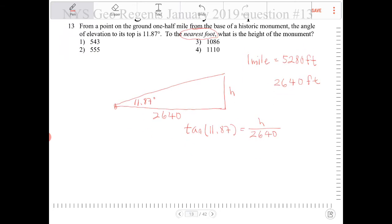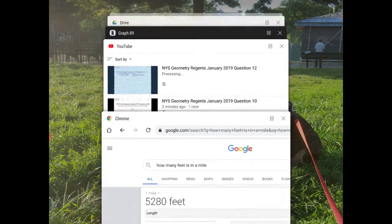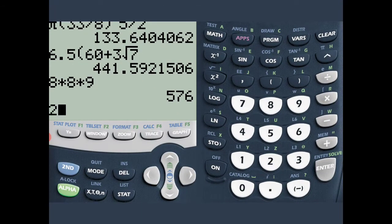We're going to solve for H. So H is equal to 2640 times tangent 11.87.